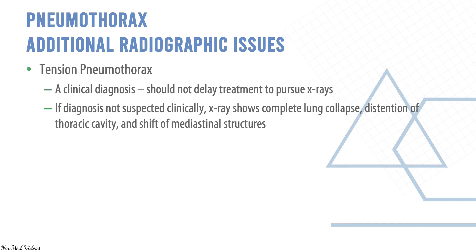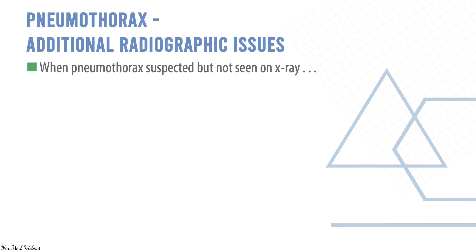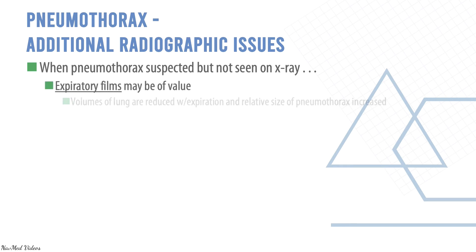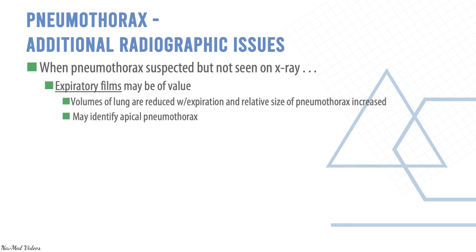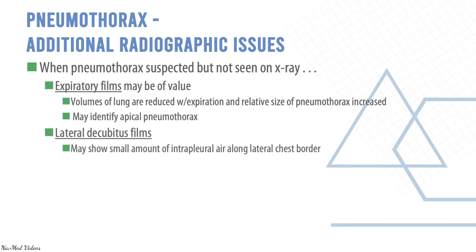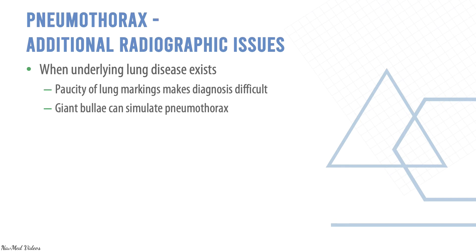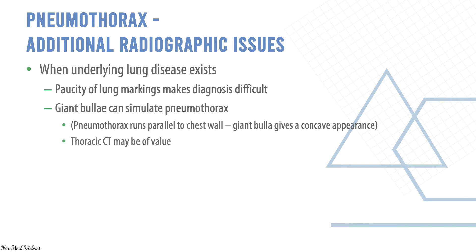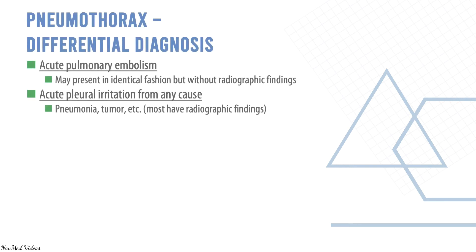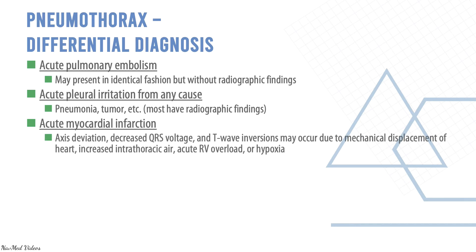When pneumothorax is suspected but not seen on X-ray, expiratory films can help — lung volumes are reduced with expiration, making the relative size of the pneumothorax larger, and it may identify apical pneumothorax. Lateral decubitus films may show small amounts of intrapleural air along the lateral chest border. When underlying lung disease exists, paucity of lung markings makes diagnosis difficult, and giant bullae can simulate pneumothorax. Thoracic CT may be of significant value. Differentials include pulmonary embolism, pleural irritation from other causes, and myocardial infarction, the latter diagnosed with ECG.